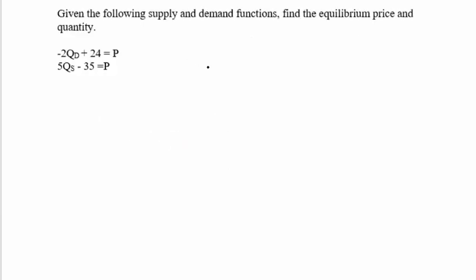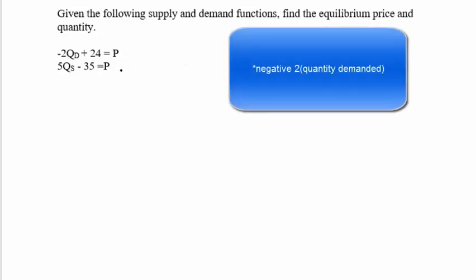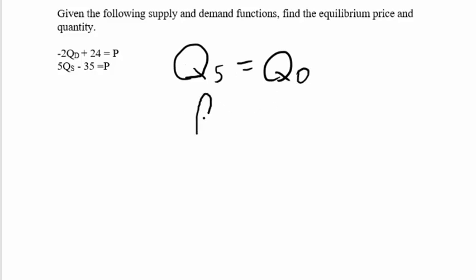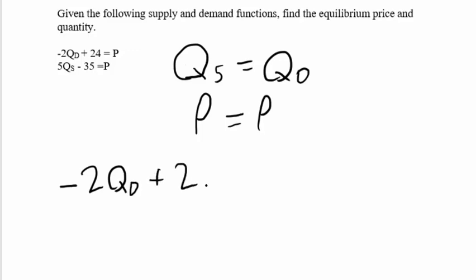Next, we have another problem where we're asked to find the equilibrium price and quantity given price functions: p equals negative 2 times quantity demanded plus 24, and p equals 5 times quantity supplied minus 35. Since we're still in equilibrium, quantity supplied equals quantity demanded, so the prices must be equal as well.